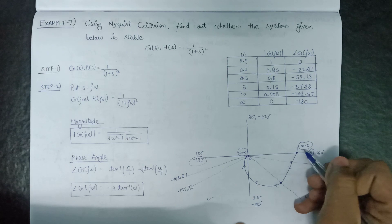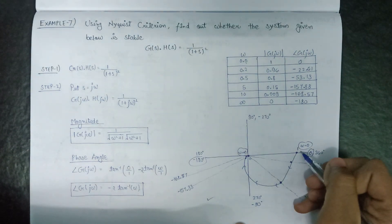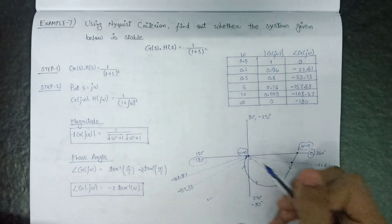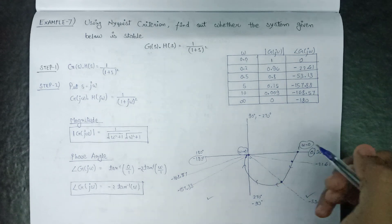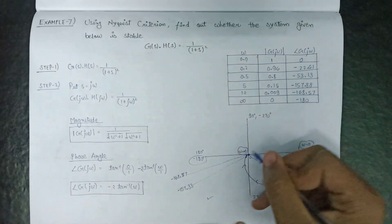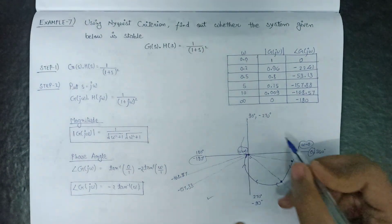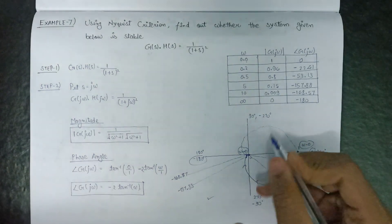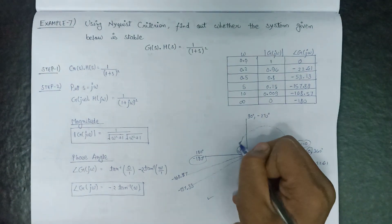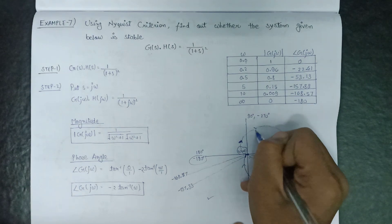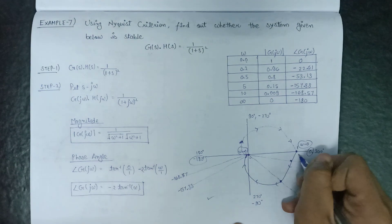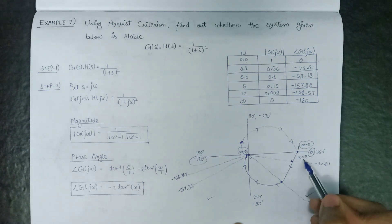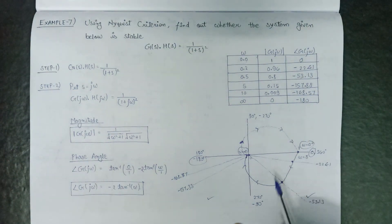The Nyquist plot is the mirror image of the polar plot, represented by dashed lines. The direction of the Nyquist plot is also clockwise, similar to the polar plot. At magnitude 1, both ω = 0⁺ and ω = 0⁻ meet, confirming this is a complete Nyquist plot.